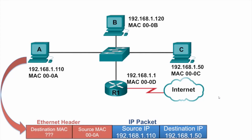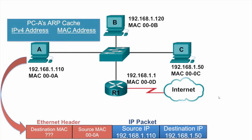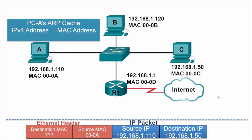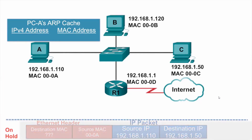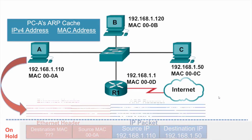Because the source and destination IP addresses are on the same network, the destination MAC address will be that of the destination IP address of PCC at 192.168.1.50. So PCA checks its ARP cache for the IP address 192.168.1.50. Because it is not in its ARP cache, it will put the packet on hold and create an ARP request.